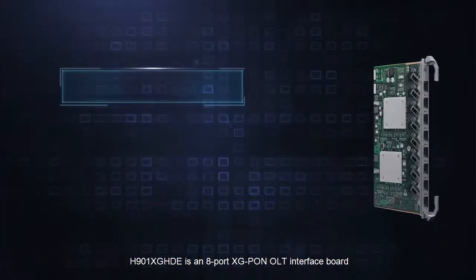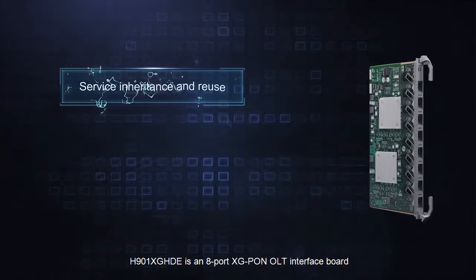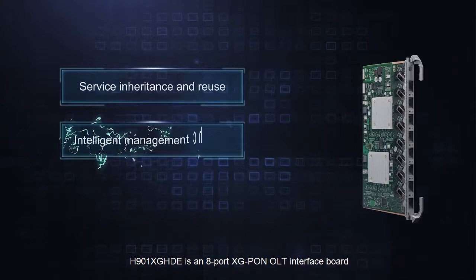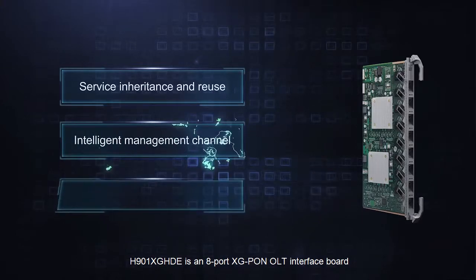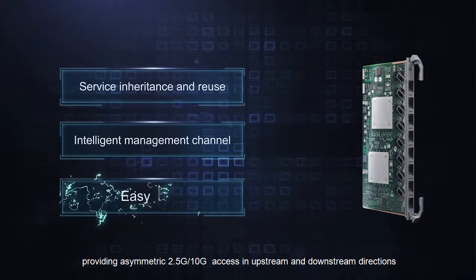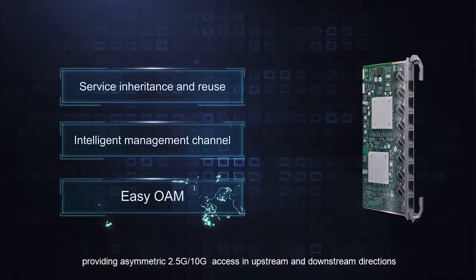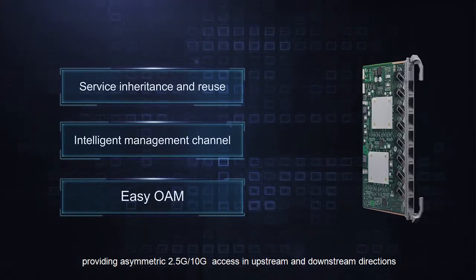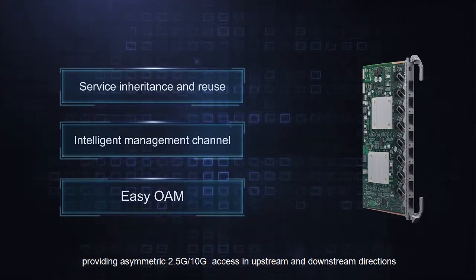H901 XGHDE is an 8-port XG-PON OLT interface board, providing symmetric 2.5G to 10G access in both upstream and downstream directions.